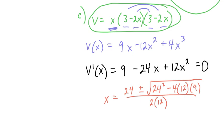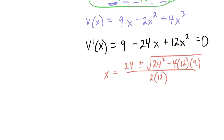24 plus the square root of 24 squared minus 4 times 12 times 9 all over 24. I'm going to see what happens if I get a minus.